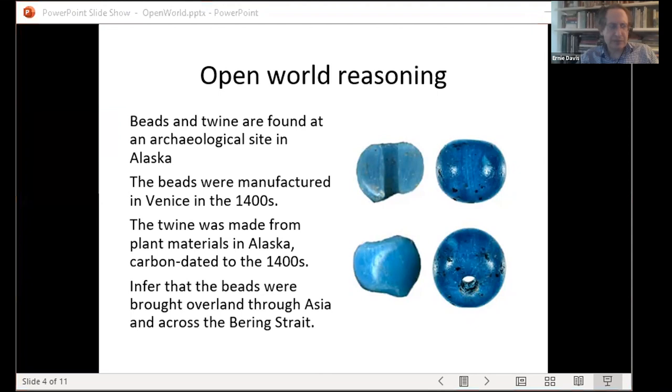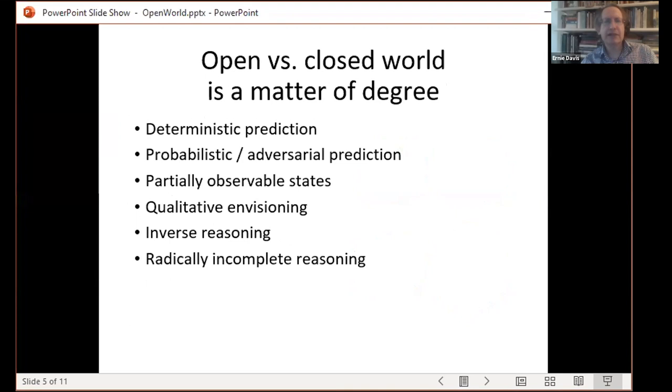Now, open world versus closed world is not a binary dichotomy. It's a matter of degree. There's more and less. So the extreme form of closed world inference is deterministic prediction. You have complete description of the starting scene, you have a deterministic theory, and you can predict completely the final situation. Complete is always relative to some level of description.